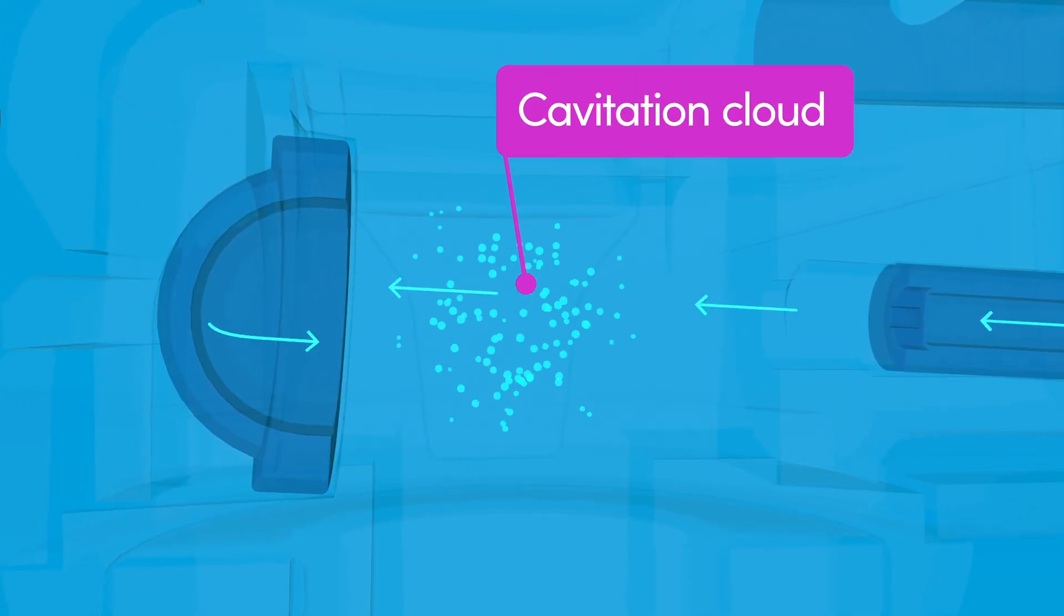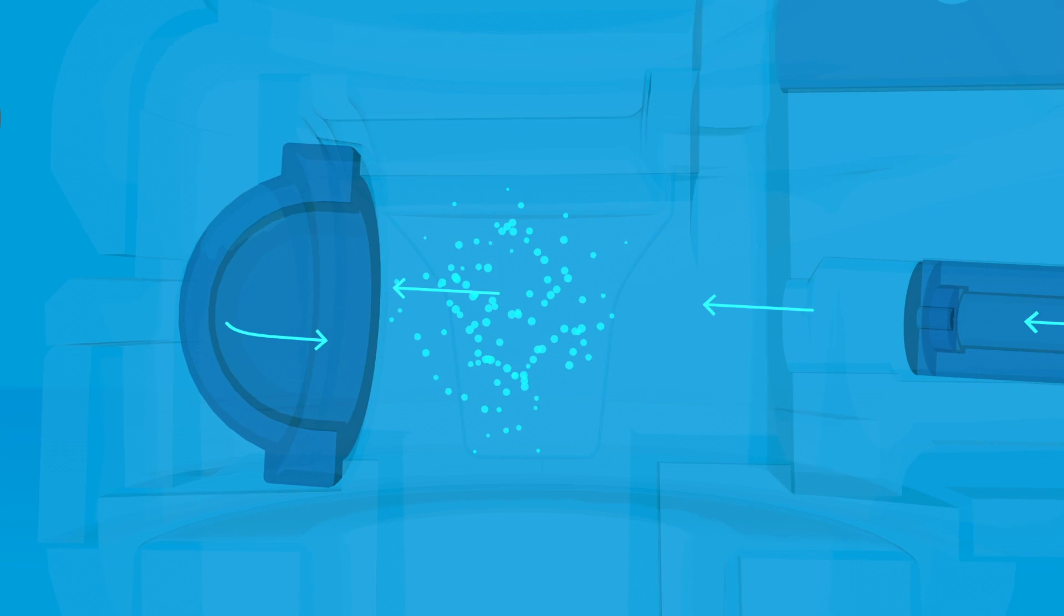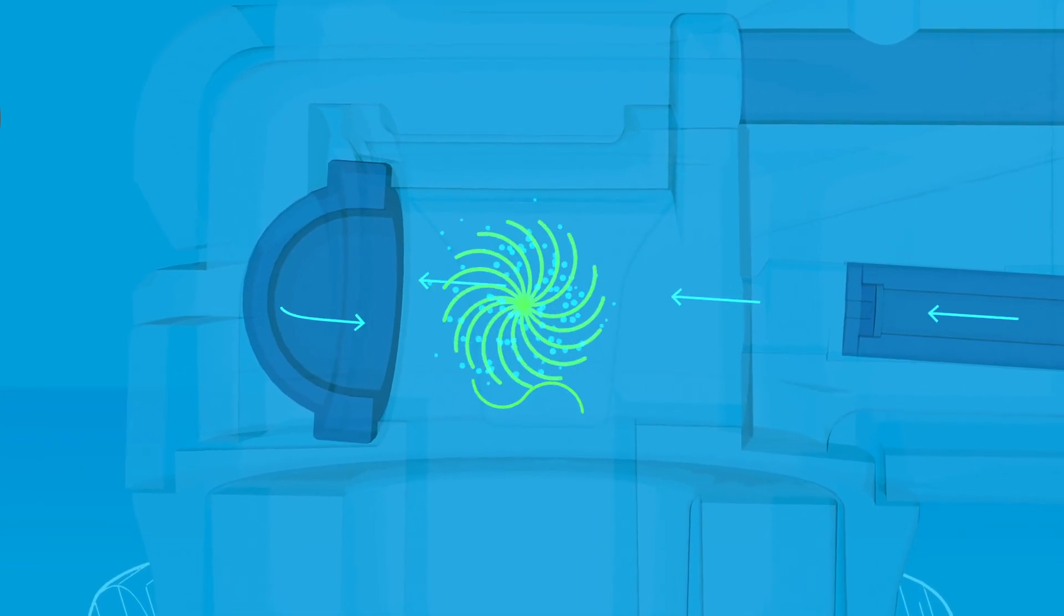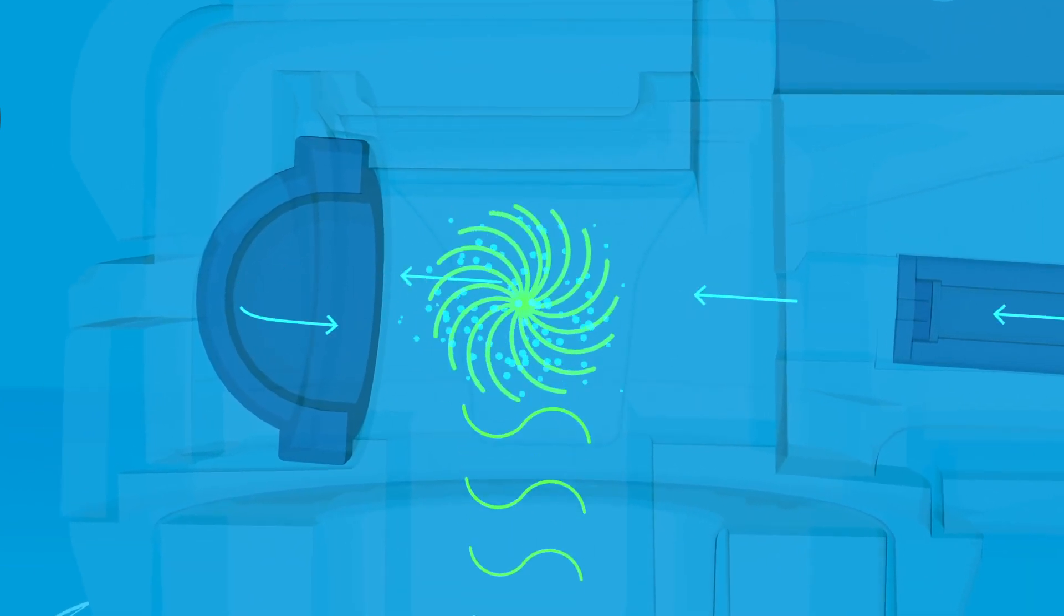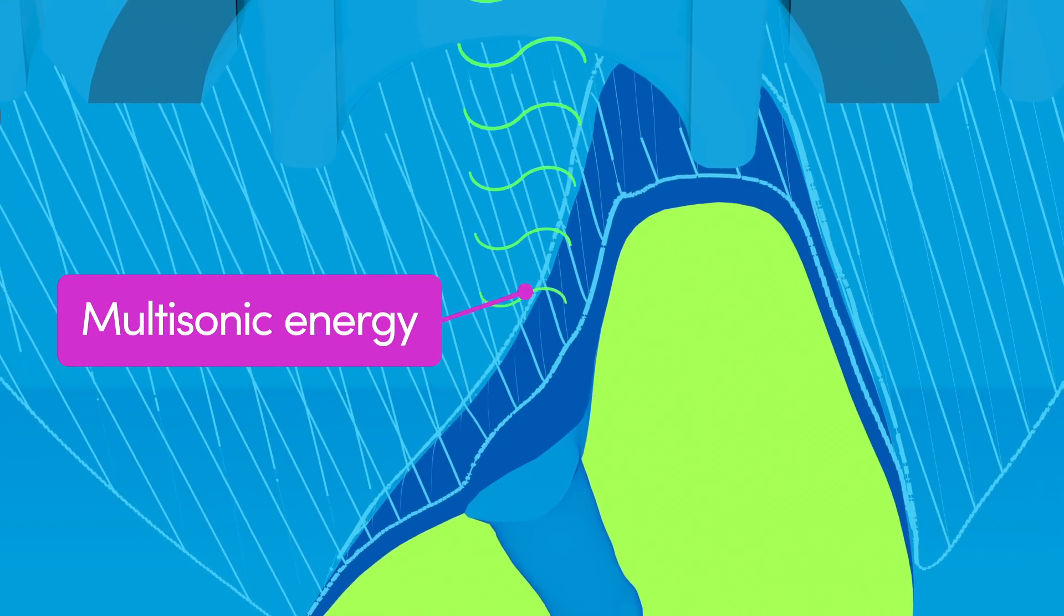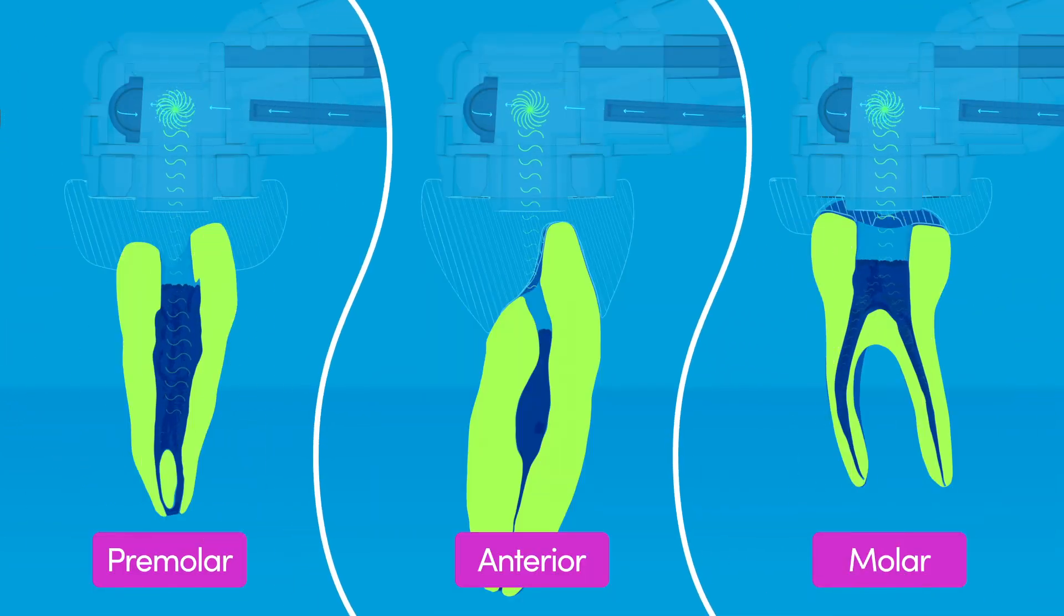The jet generates a continuous cavitation cloud where tiny vapor bubbles implode to produce multisonic energy, sending shockwaves out of the PI and into the tooth. Multisonic energy dissolves tissue and bacteria throughout the root canal system, accelerating debridement and disinfection of complex anatomy.